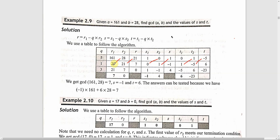Next step: 28 divided by 21. We get quotient of 1 and remainder as 7. For s: s1 is 0 and s2 is 1. New s value is s1 minus q into s2, that is 0 minus 1 into 1, which gives minus 1. For t: t1 is 1 and t2 is minus 5. New t value is t1 minus q into t2, that is 1 minus 1 into minus 5, which gives 1 plus 5 equal to 6.